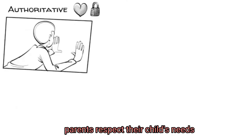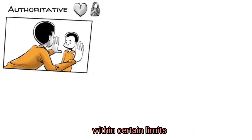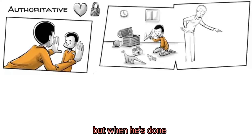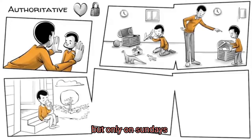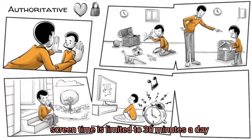Arthur's authoritative parents respect their child's needs but believe that kids need freedom within certain limits. Arthur can freely play, but when he's done, he needs to help tidy up. He is allowed to eat ice cream, but only on Sundays. Screen time is limited to 30 minutes a day.